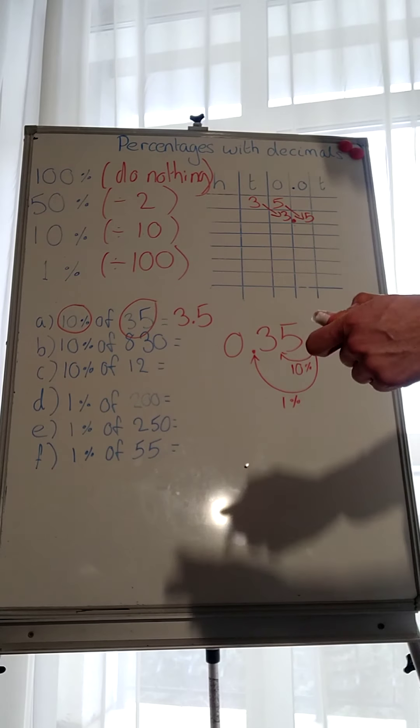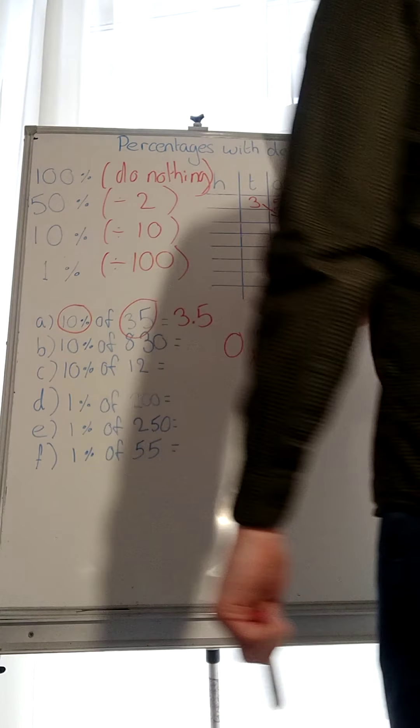But what can we do if we need 1%? We're going to divide it by 100. So we move the decimal point two places to the left, giving us 0.35. This would be 1%. Hope we're not going too fast here, but let's try a few more.